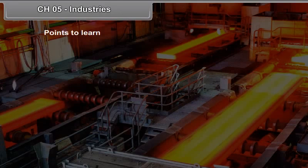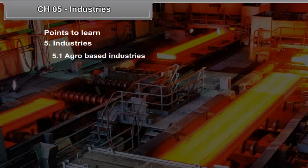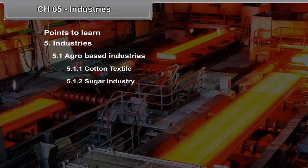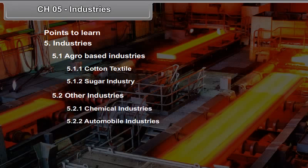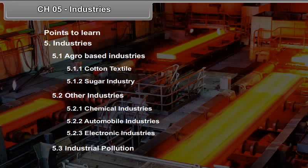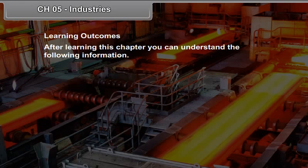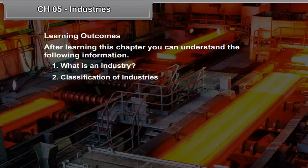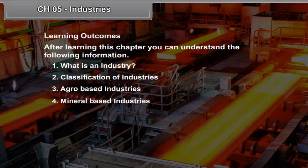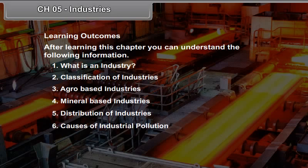Chapter 5 covers industries including: agro-based industries (cotton textile and sugar industry), other industries (chemical, automobile and electronic industries), and industrial pollution. Learning outcomes include understanding what an industry is, classification of industries, agro-based and mineral-based industries, distribution of industries, and causes of industrial pollution.